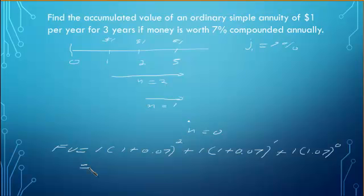So then this has a value of 1.1449 plus. This will have a value of 1.07. In other words, this dollar, after 2 years, will have made what? A little more than 14 cents.